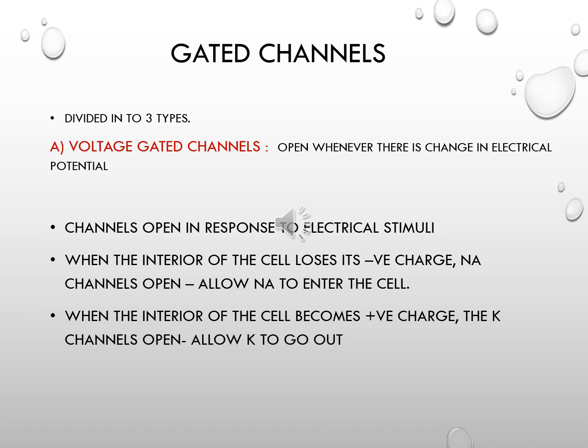The resting membrane potential of cells is in the range of minus 90 millivolts to minus 70 millivolts, varying in muscle cells, nerve cells, etc. Whenever there is an increase in the potential — that is, the negative charge inside the cell is decreased and the negativity is reduced — the voltage-gated sodium channels open and allow sodium ions to enter the cell.